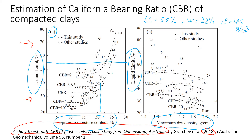Plotting those values takes us to a territory where CBR is around or less than 2. Remember, these are just estimates — not exact values. But at an early stage of site investigation or laboratory testing, it's always good to know what to expect, and this gives you a good idea about CBR.